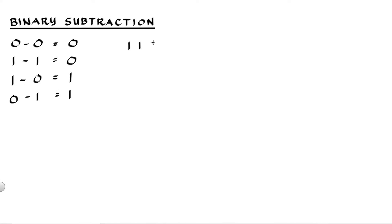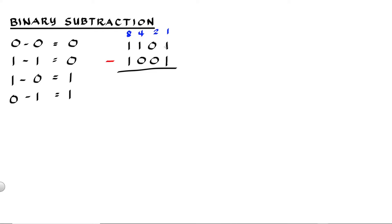Let's say we have 1101 minus 1001. The rightmost column is for the ones, next column is for the twos, next is for 4 and 8. 1101 is the binary equivalent of 13 — we have 8 plus 4 plus 1 is equal to 13.